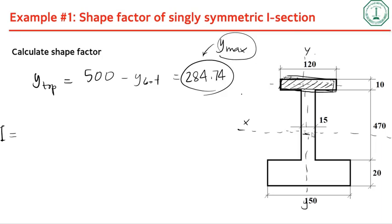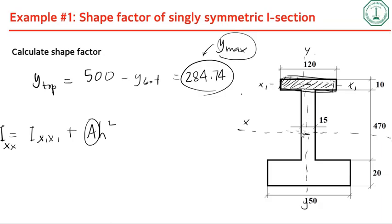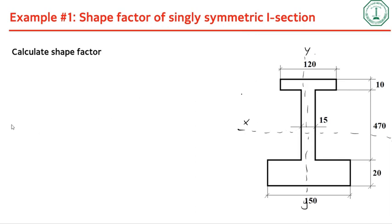We transfer the moment of inertia to the centroidal axis. I_xx equals I_x1x1 plus A times h-squared, where A is the area of the small region and h is the distance between the centroid of that small area and the centroid of the entire cross-section. We calculate I_xx for each area and then sum them up.